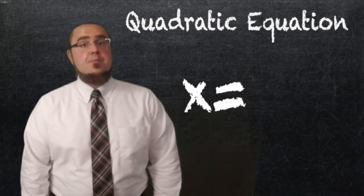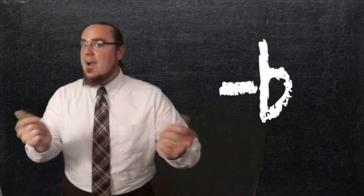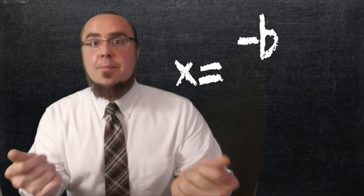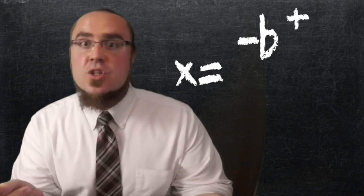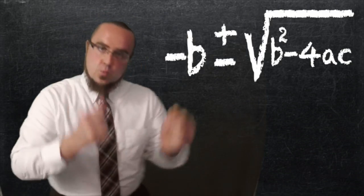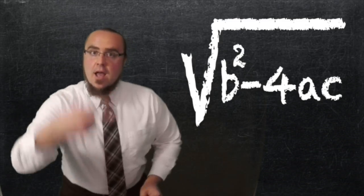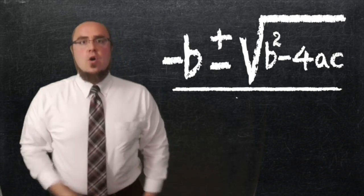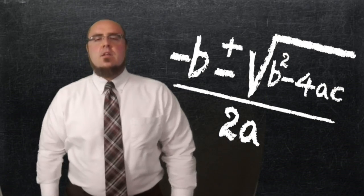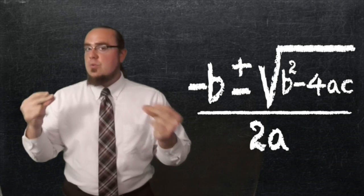x equals negative b, plus or minus the square root of b squared minus 4ac, over 2a.